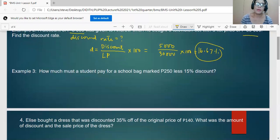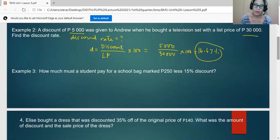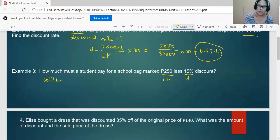For number three, how much must a student pay for a school bag marked 250 less 15% discount? So this one is the list price, and of course this is the discount rate. We are asked here to solve for the selling price.